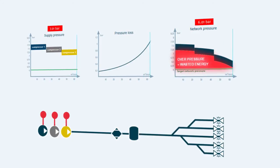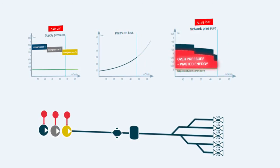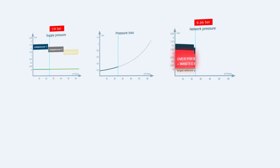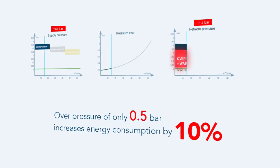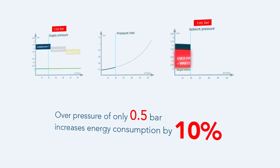If the required pressure level is, say, 6 bar, and the average system pressure is maintained at 6.5 bar, this extra 0.5 bar increases the energy consumption by 10%.